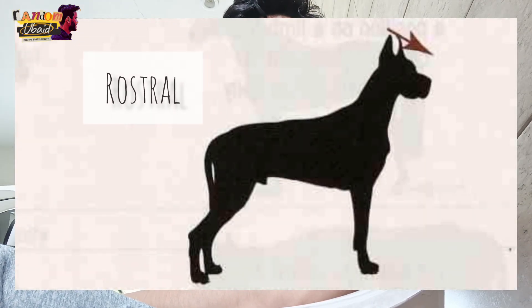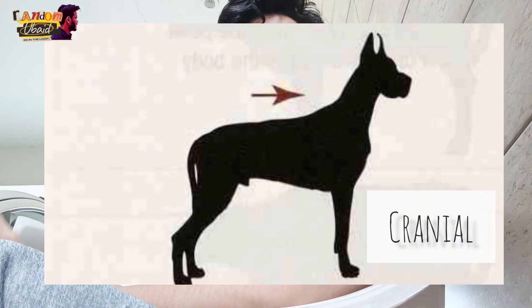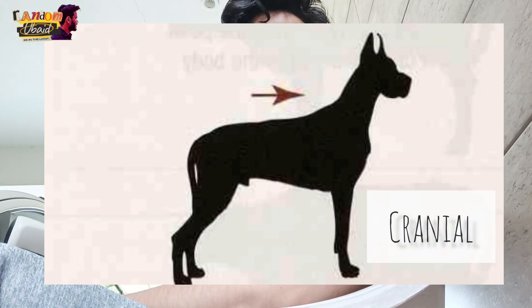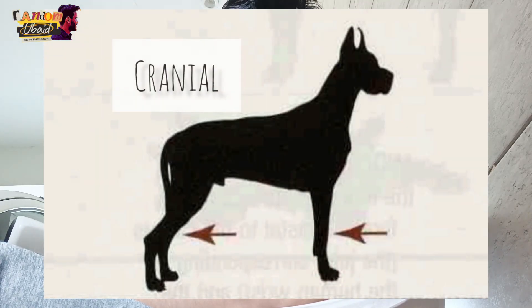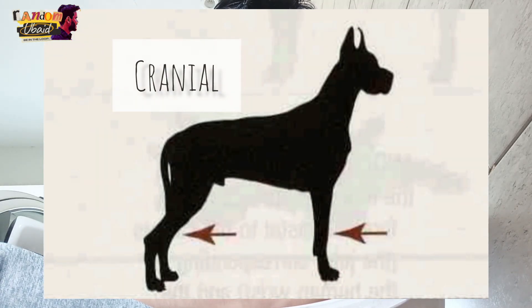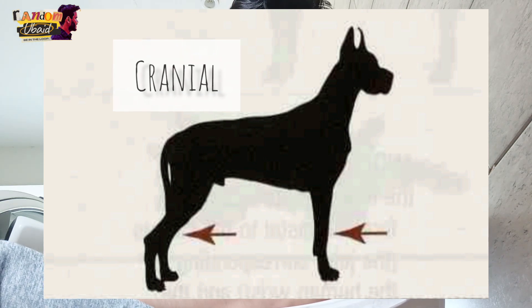Rostral refers to towards the tip of the nose when referring to the head. Cranial refers to towards the head end of the body, or in a direction towards the head, and on the front of the forelegs above the carpus and on the front of the back legs above the tarsus.